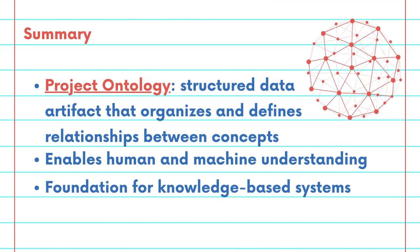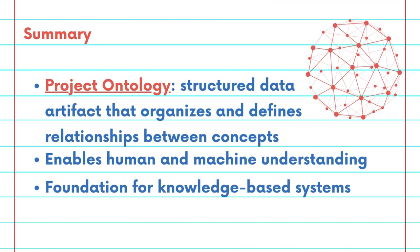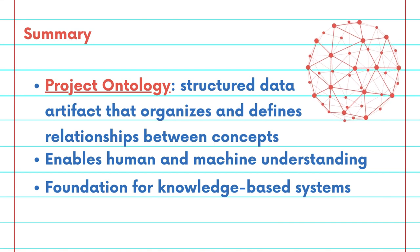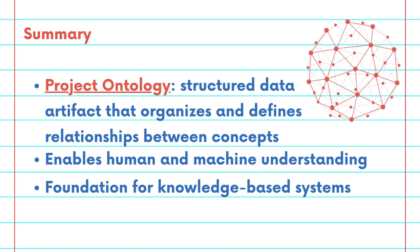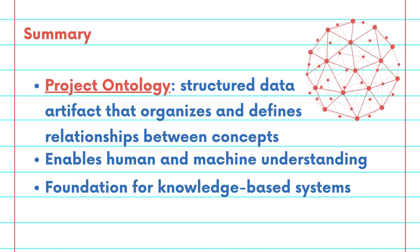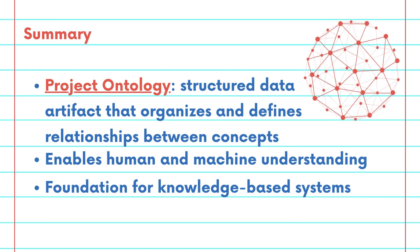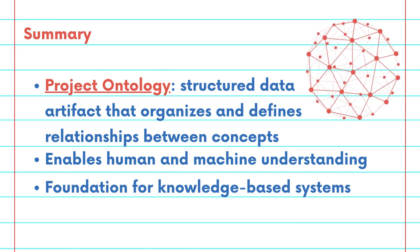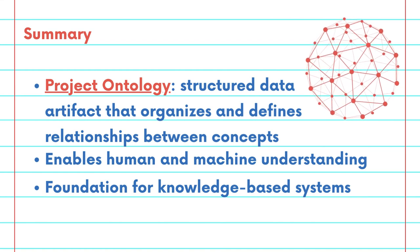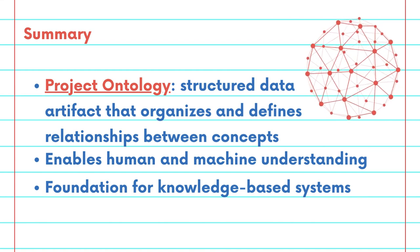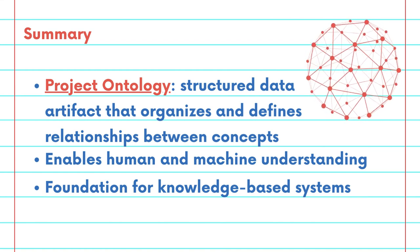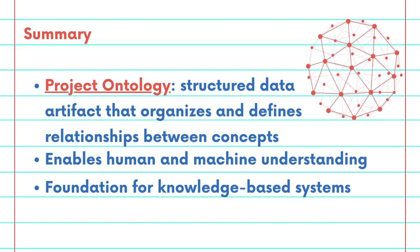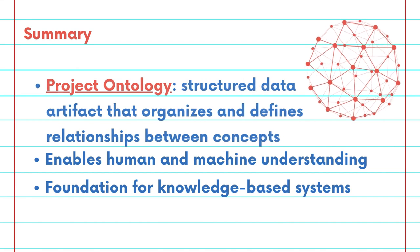In summary, a project ontology is a structured data artifact that organizes and defines the relationships between concepts within a specific domain, enabling both humans and machines to better understand and process complex information. It serves as the foundation for building more efficient and intelligent knowledge-based systems.